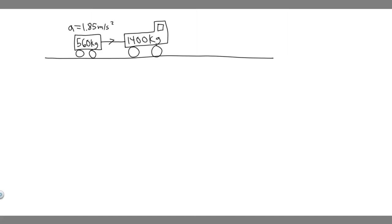In this problem, we're told on vacation your 1,400 kilogram car pulls a 560 kilogram trailer away from a stoplight with an acceleration of 1.85 meters per second squared. Part A: what is the net force exerted on the trailer? Part B: what force does the trailer exert on the car? And Part C: what is the net force acting on the car?